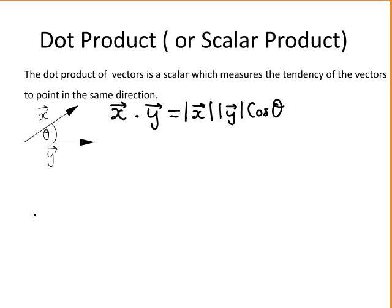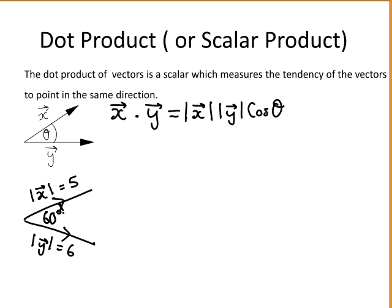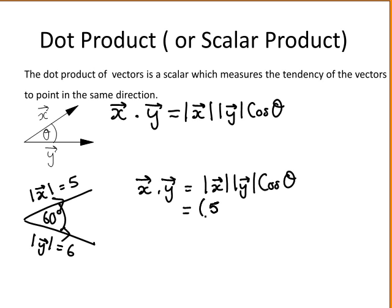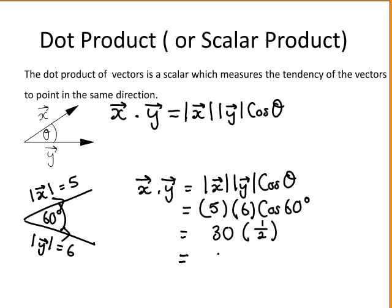Let's look at an example. Suppose this is vector x, where the modulus of vector x is equal to 5, and this is vector y, where the modulus of vector y is equal to 6, and the angle between the two vectors is 60 degrees. Then the dot product of vector x with vector y is equal to the modulus of vector x times the modulus of vector y times the cosine of the angle between them. So this is equal to 5 times 6 times the cosine of 60 degrees. The cosine of 60 degrees is a half, so this is equal to 15.